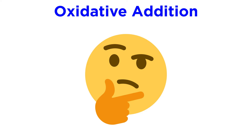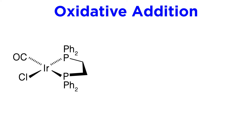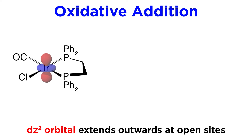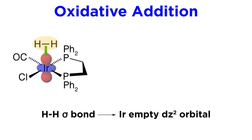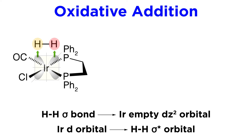How does this work mechanistically? Let's take a look at this square planar iridium complex with a chloride, carbonyl, and bidentate phosphine ligand. The dz-squared orbital on the metal projects its lobes along the axis that has open coordination sites. Let's say molecular hydrogen approaches this orbital in perpendicular fashion. Hydrogen can donate electron density from this sigma bond into this d orbital, which weakens the sigma bond. It can also accept backbonding into its sigma-star antibonding orbital, which weakens the bond further.